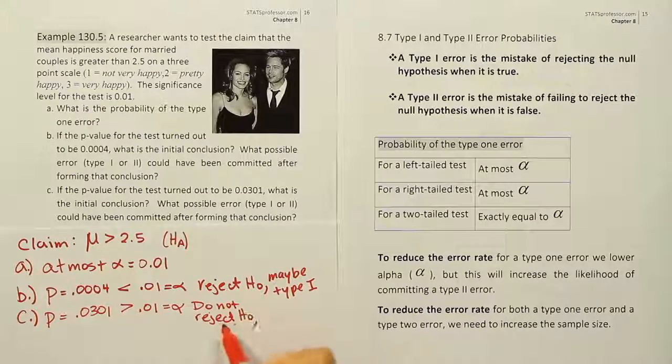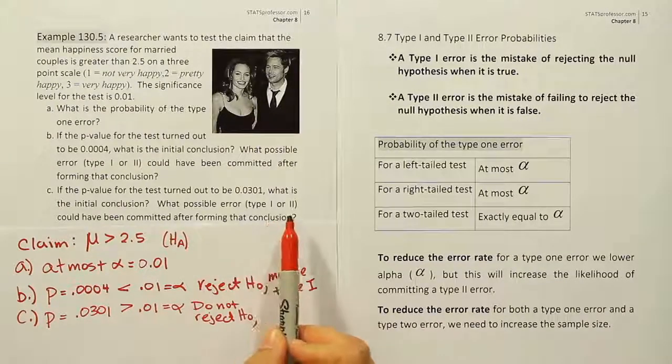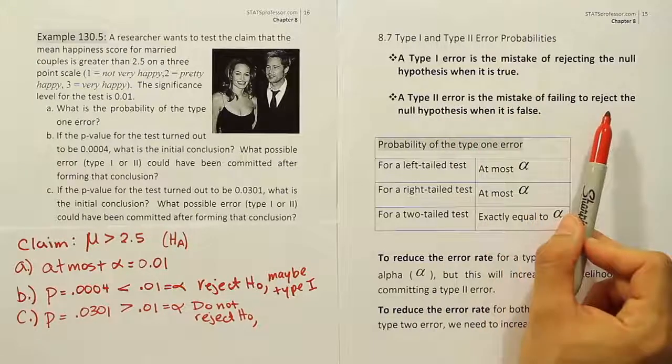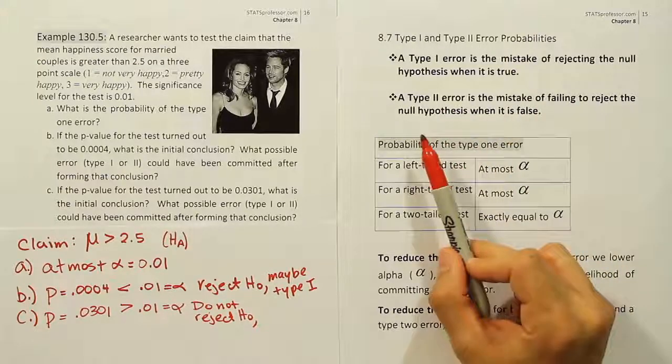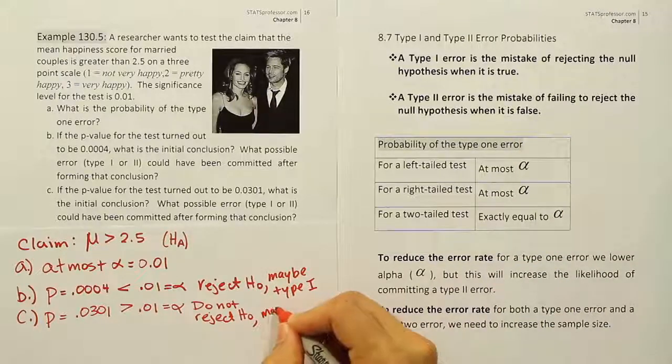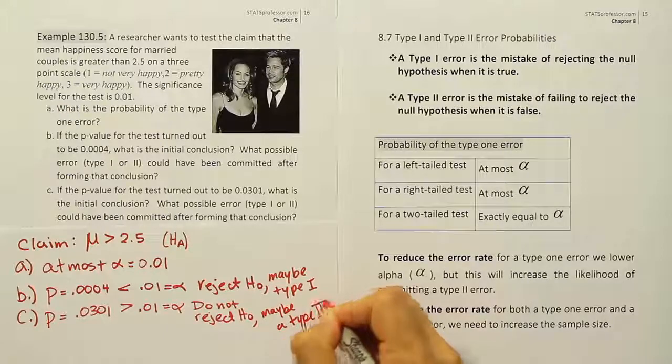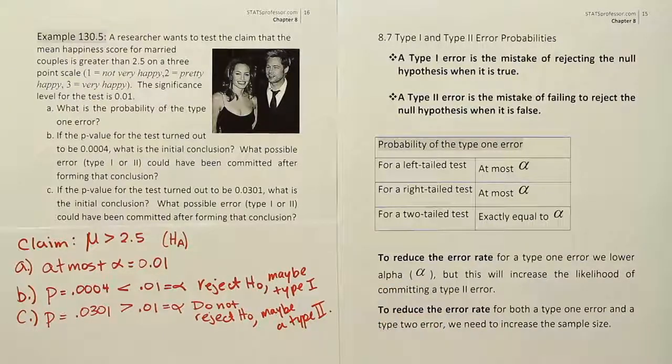And remember, if you don't reject H0, then it is possible that we might have committed the type 2 error, like we just spoke about. When you don't reject, you might have just failed to reject something that was false. So maybe, maybe a type 2. But just maybe. We don't know for certain that we committed it.